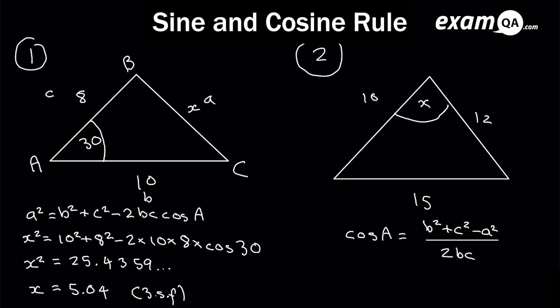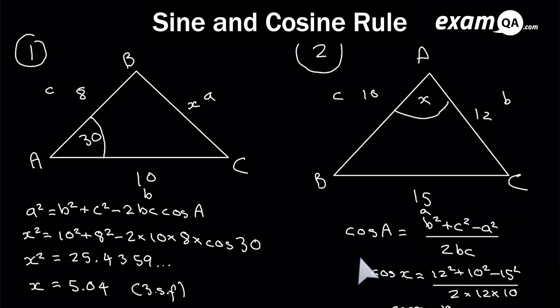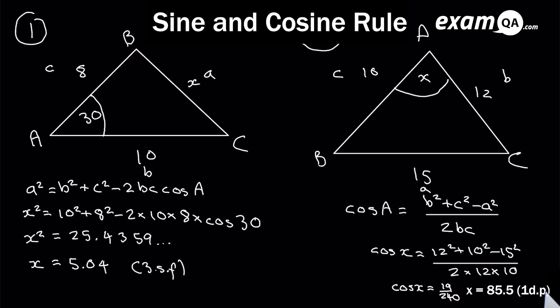Now let's finish the working for scenario two of the cosine rule. Since we're working out angle x, we label it capital A. Fill in the rearranged formula and that gives cos x equals 19 over 240. To work out angle x you need to do shift cos — the inverse cos of 19 over 240 — and that gives us 85.5 degrees to 1 decimal place.